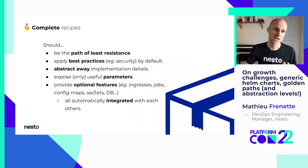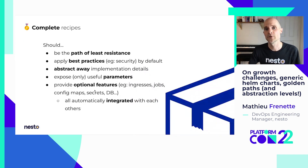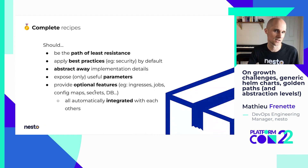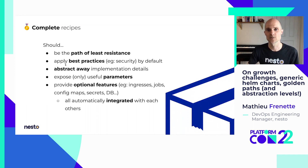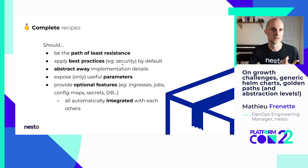Those complete recipes should really be the path of least resistance if you want developers to adopt them and stick to them in most circumstances. If they're easy to use, they're a no-brainer and developers will just go to them without asking. You should also encode all your best practices — things about security, observability, all those things — by default in the complete recipes, enabled without having to go out of your way.